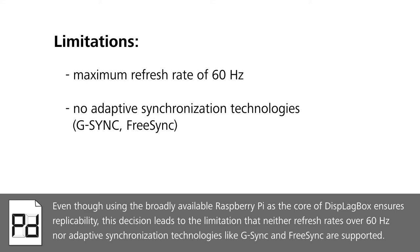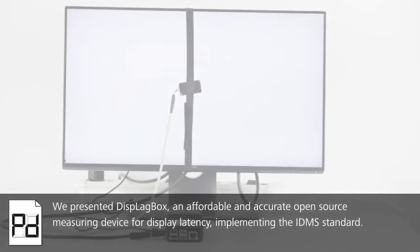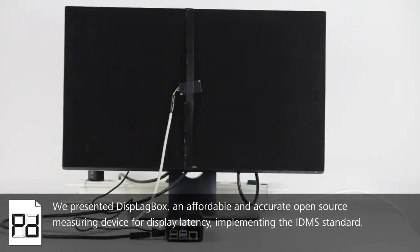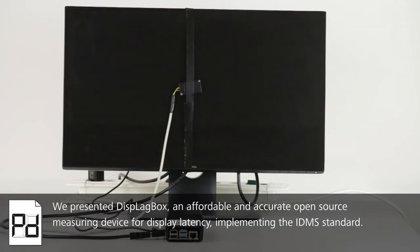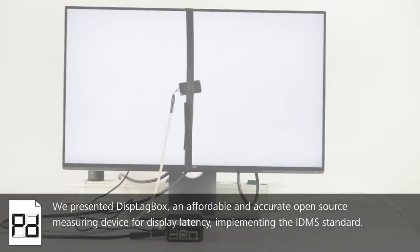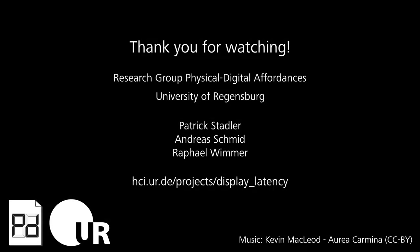Even though using the broadly available Raspberry Pi as the core of this black box ensures replicability, this decision leads to the limitation that neither refresh rates over 60 Hz nor adaptive synchronization technologies like G-Sync and FreeSync are supported. We presented this black box, an affordable and accurate open source measuring device for display latency, implementing the IDMS standard.